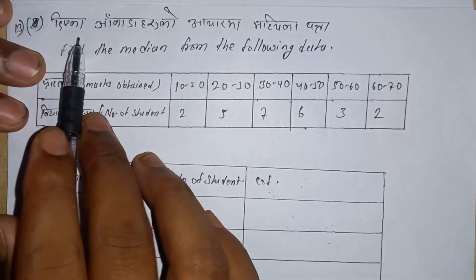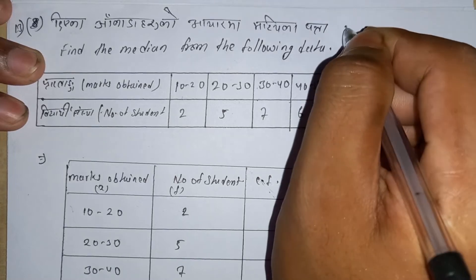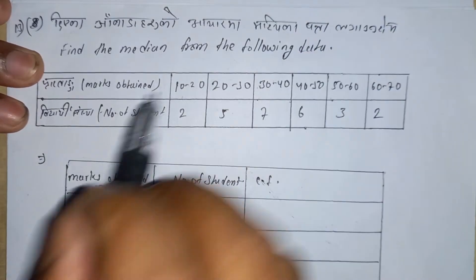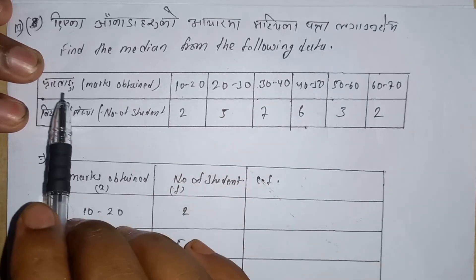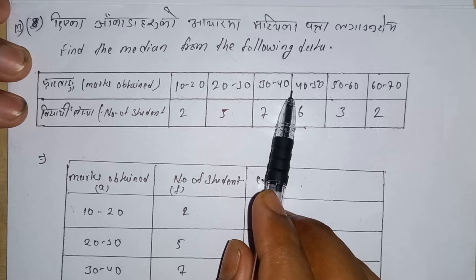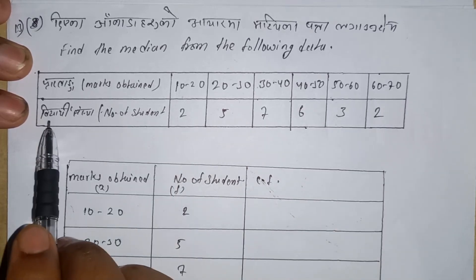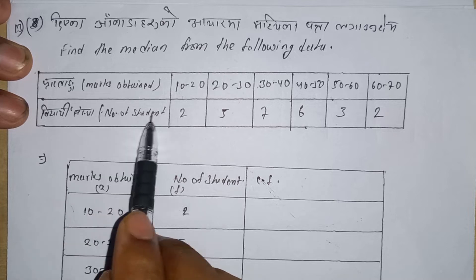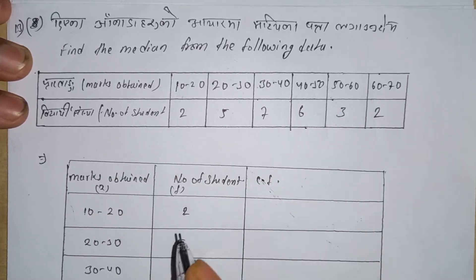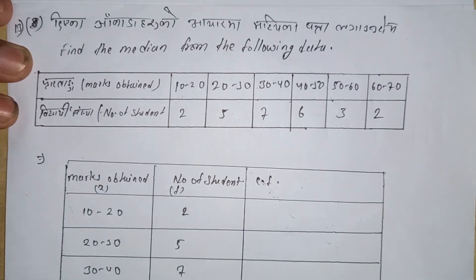Question number 13: Find the median from the following data. The table shows marks obtained by students: 10-20, 20-30, 30-40, 40-50, 50-60, 60-70, with number of students being 2, 5, 7, 6, 3, 2 respectively.